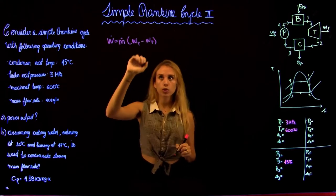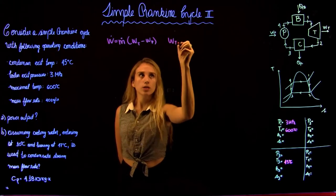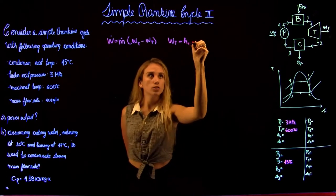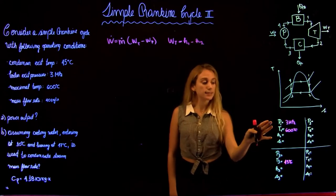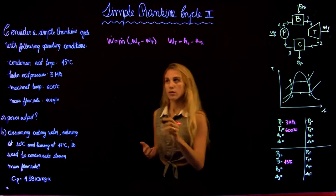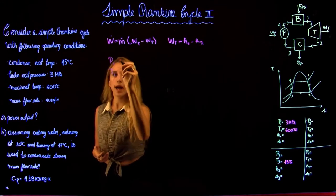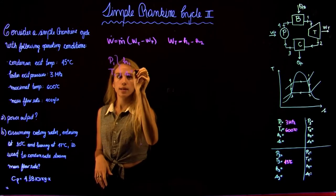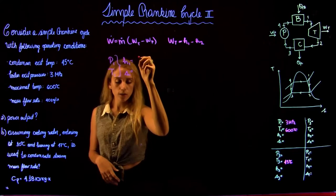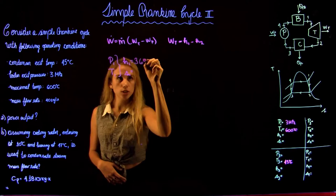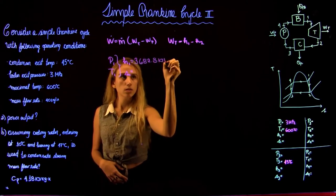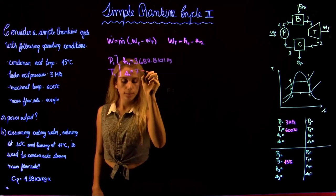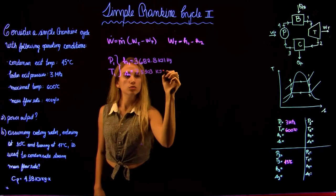Let's start with the work of the turbine. We know that the work of the turbine can be calculated from the difference of the enthalpies, H1 minus H2. At state 1 we have the pressure and the temperature, so we can go to the A6 table to find H1 and S1. For H1 we have 3682.8 kJ/kg, and S1 equals 7.5103 kJ/kg·K.